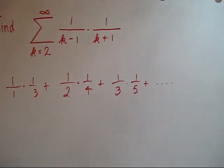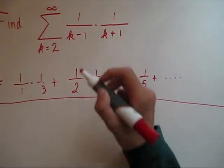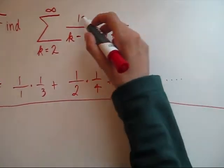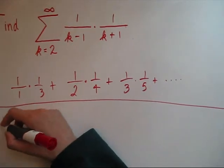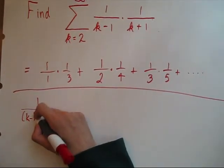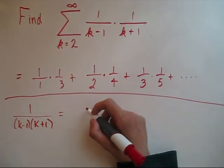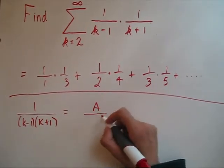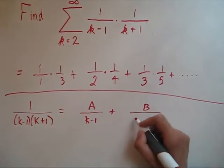Well, I still don't know how to find that sum, but we're going to do a trick. We're going to rewrite the kth term using partial fractions. So we'll take 1 over k minus 1 times k plus 1 and set it equal to a over k minus 1 plus b over k plus 1.